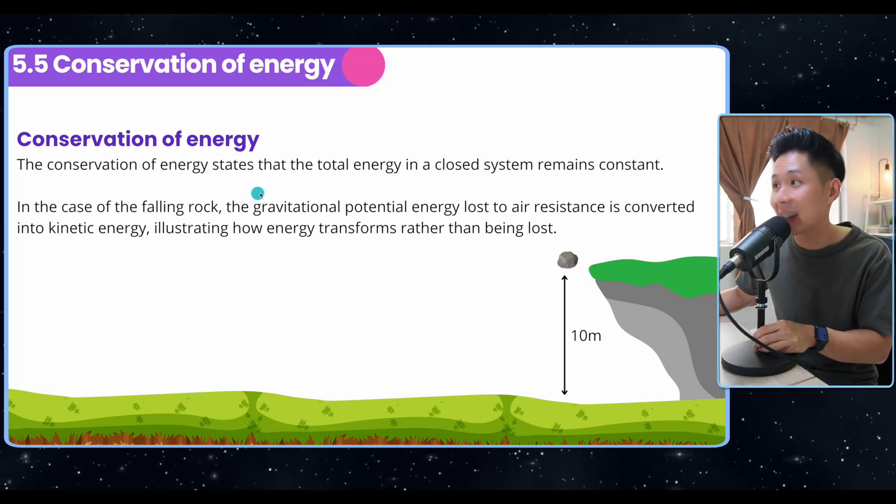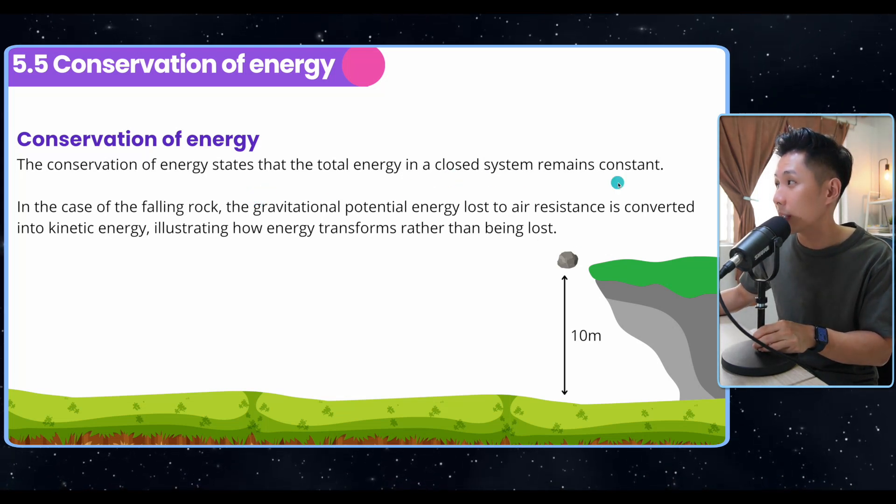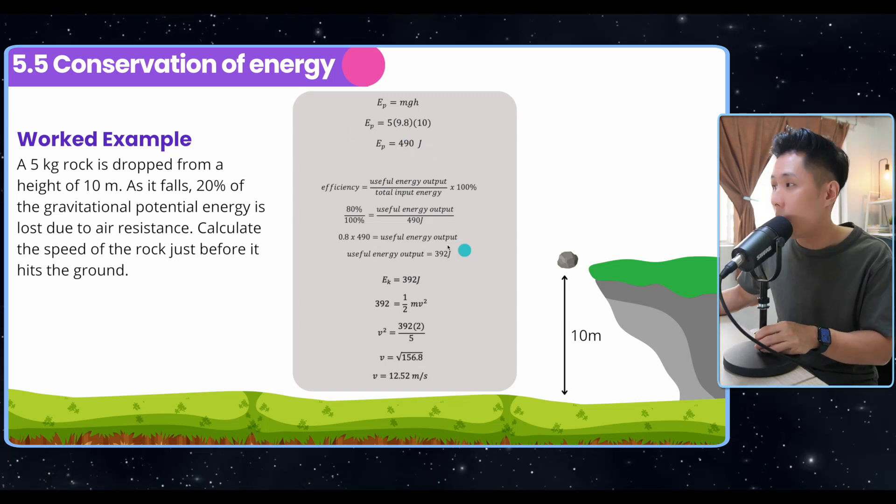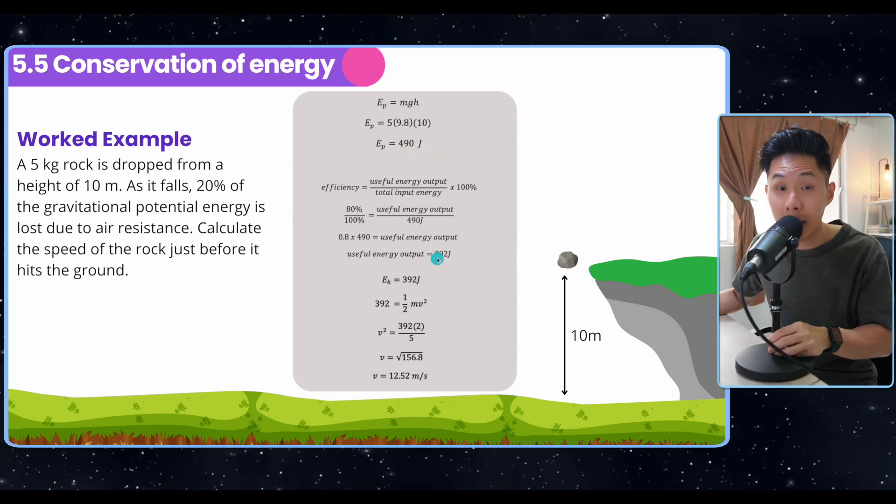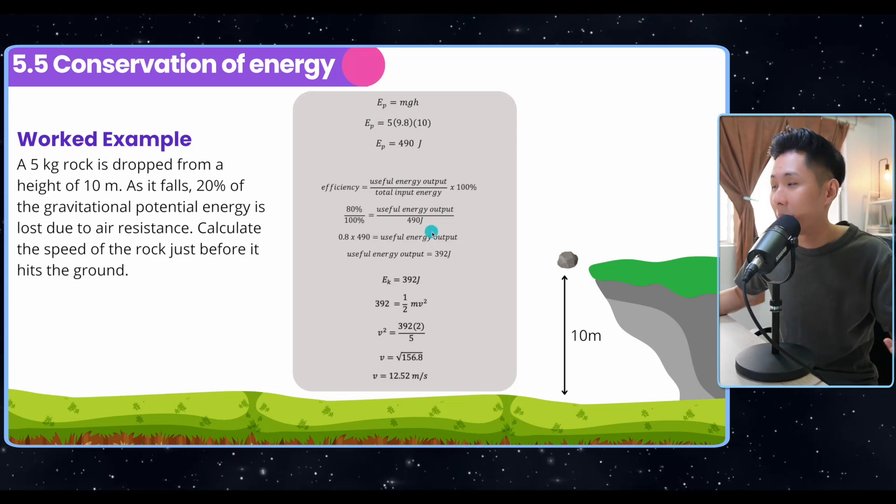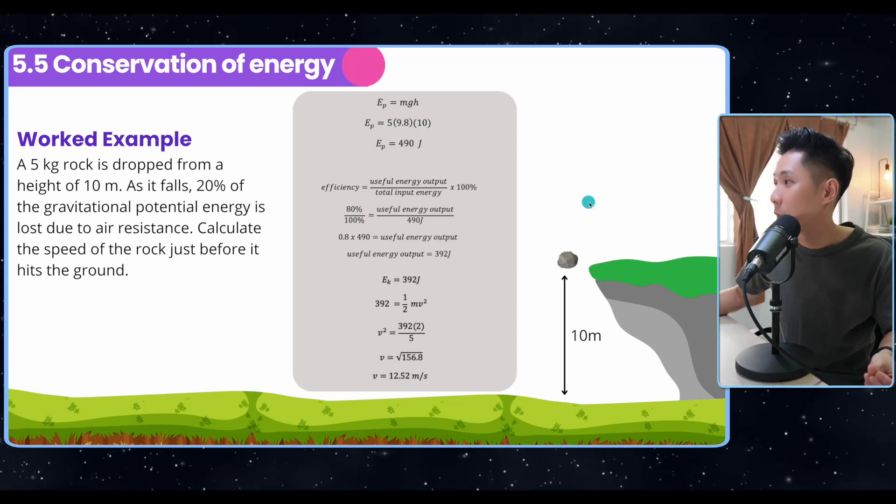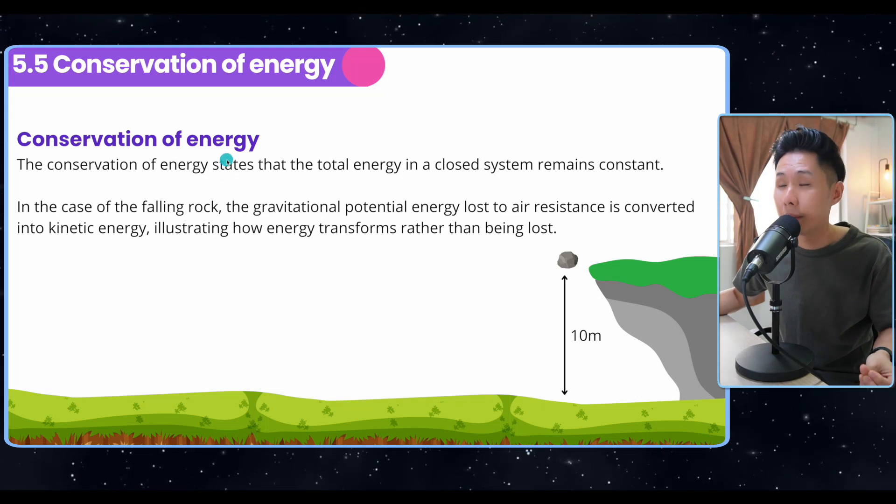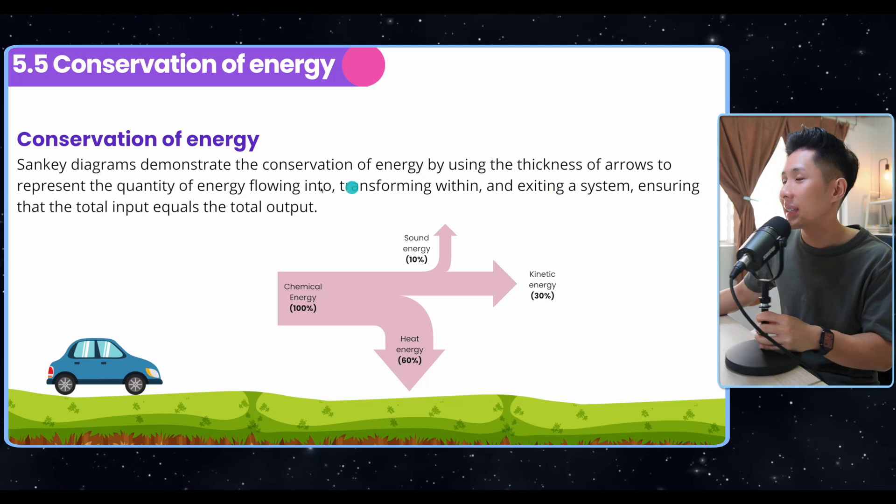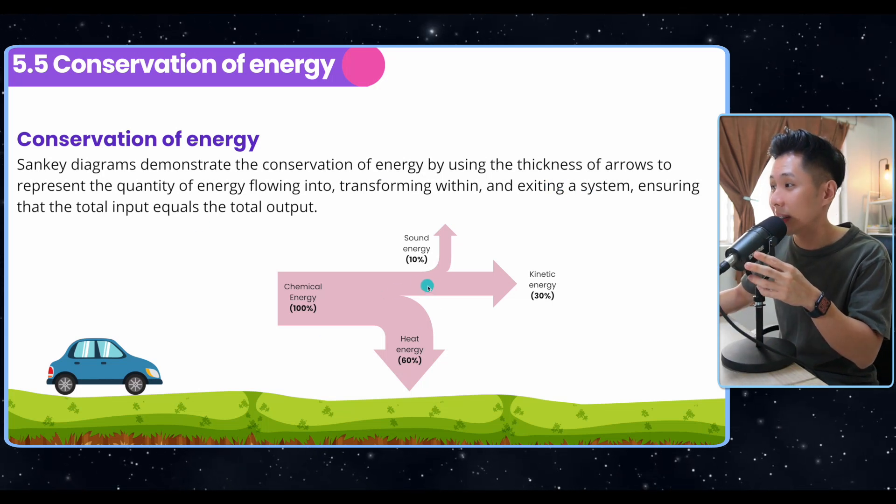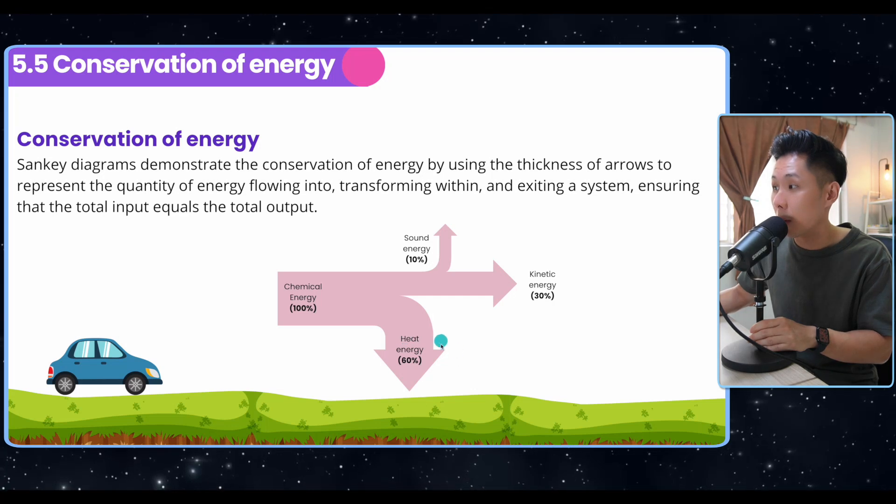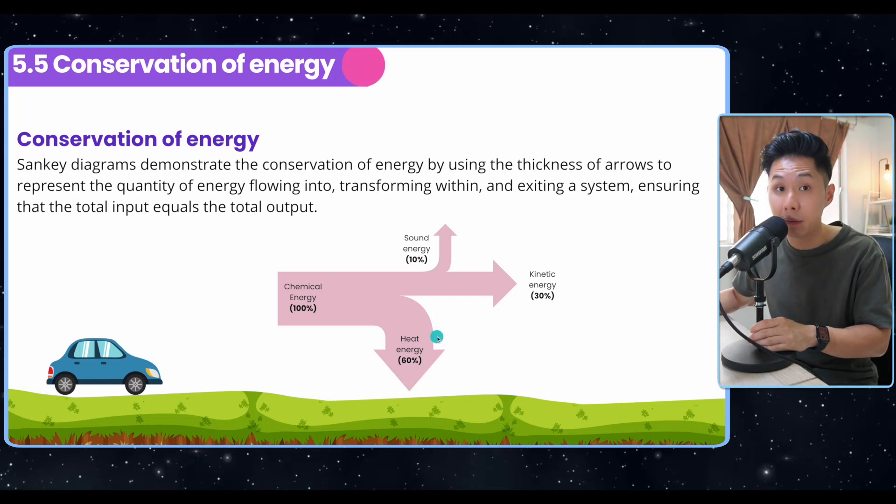So the conservation of energy states that the total energy in a closed system remains constant. So you can see that if my GPE is 490, only 392 joules of energy is converted to kinetic. But it doesn't mean that we just lost it to nowhere, but it's lost to the air resistance. So by having the conservation of energy in mind, we can always find out where does the energy actually go. So Sankey diagrams are a good way for us to see how energy is distributed. The bigger the arrow, the bigger the proportion of energy allocated to that specific type of energy.